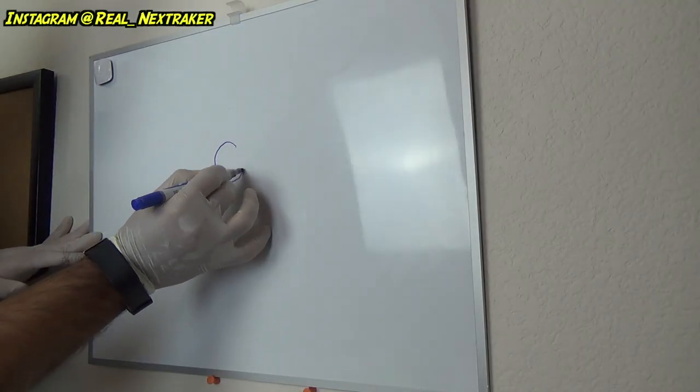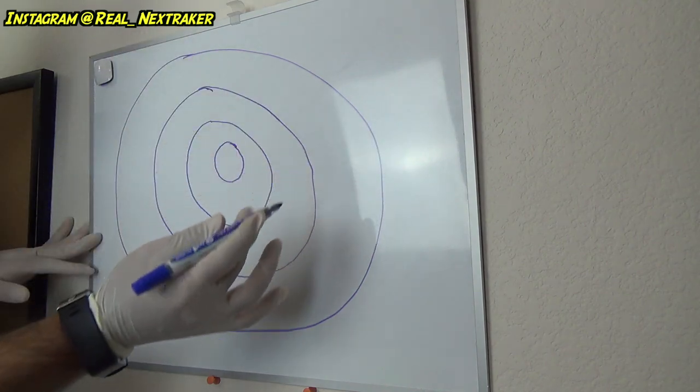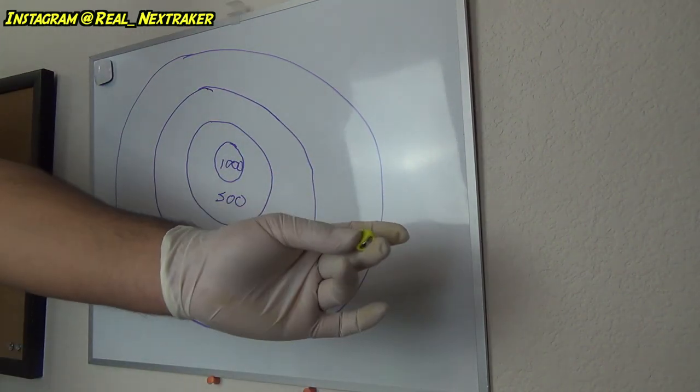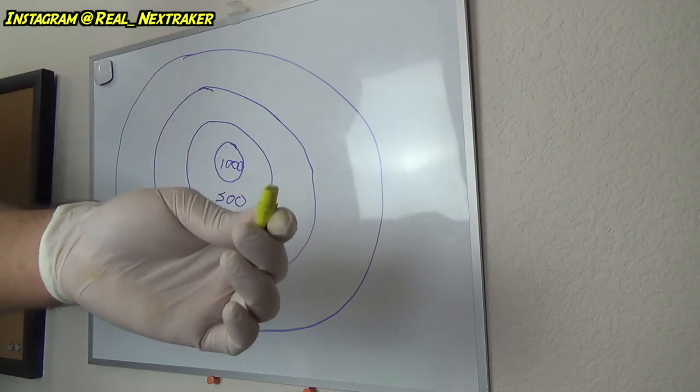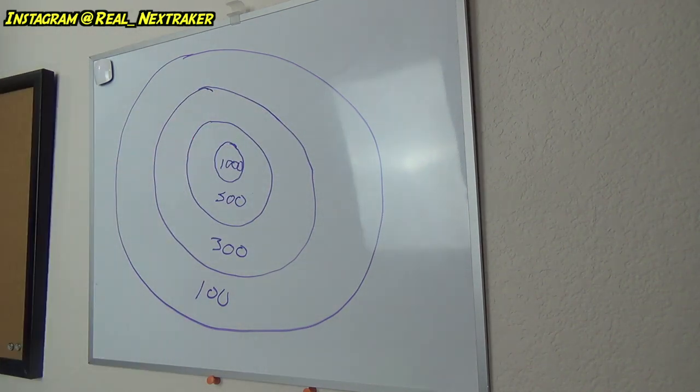If the coast is clear, you're gonna draw a bullseye on the dry erase board. Try to make large circles and determine a point system. Usually the bullseye gets you more points. So once you have your bullseye ready, that's when you're gonna challenge your friends at this game. Basically, you're gonna be throwing these magnet erasers at the bullseye on the dry erase board.